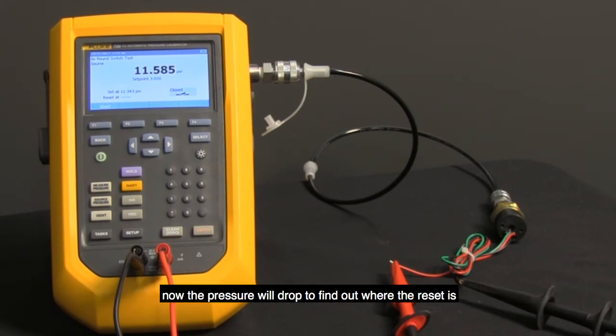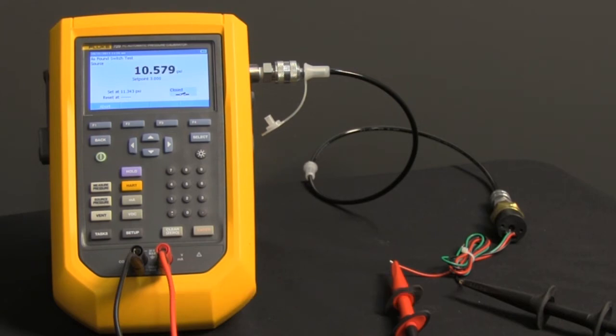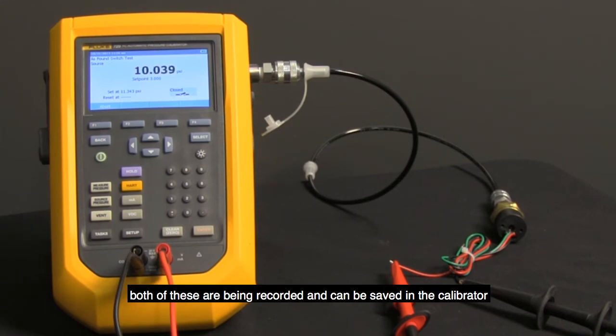Now the pressure will drop to find out where the reset is. Both of these are being recorded and can be saved in the calibrator.